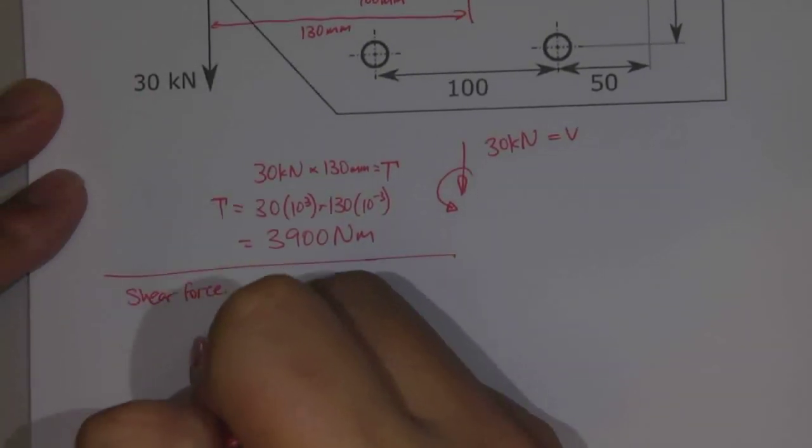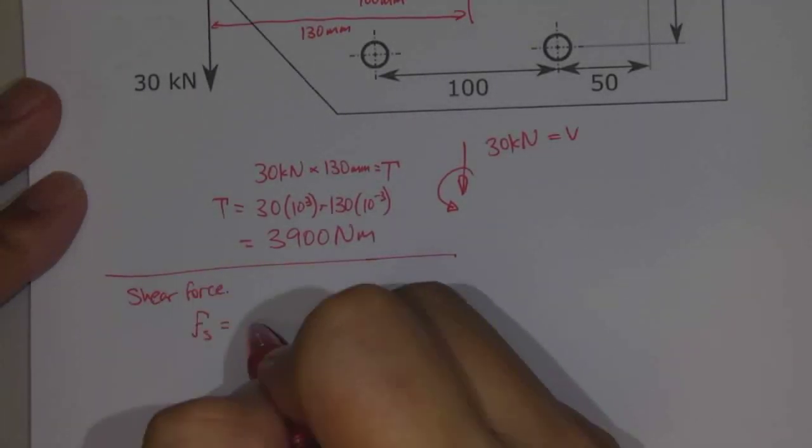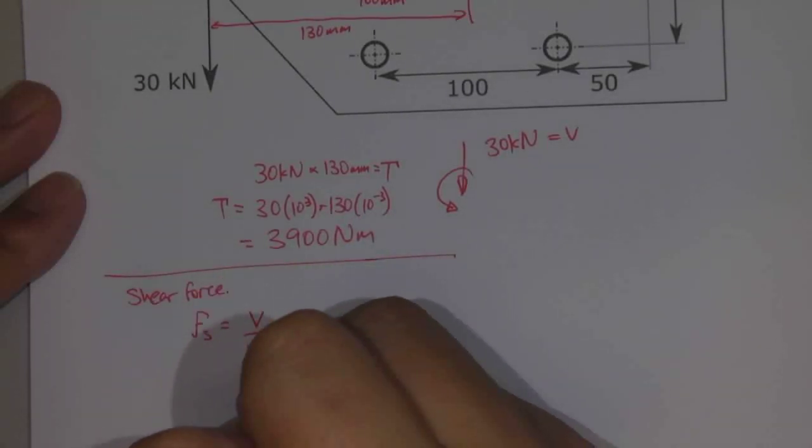We can calculate the amount of force on each bolt, we'll call that Fs, and this is equal to our shear force divided by the number of bolts that we've got.